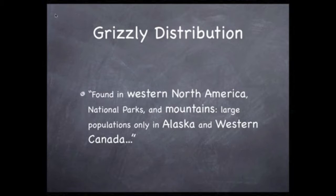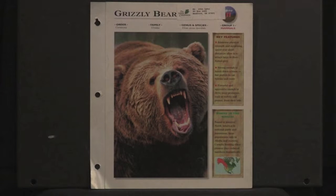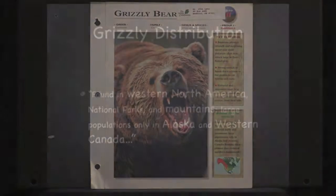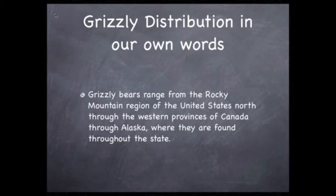You want to note Western North America, national parks, and mountains at Alaska and Western Canada. I've enlarged the words that you would write down as notes. Look again at the map down in the corner. Do you see how different this is from the one of black bears? The red-shaded part starts at the Rocky Mountains in the United States and ranges up to Alaska, covering some provinces in Canada on the way to Alaska.